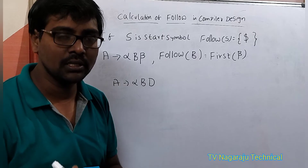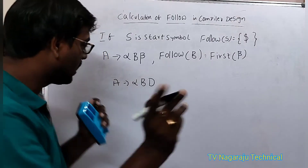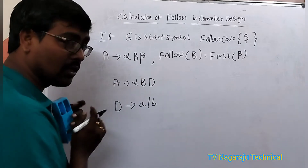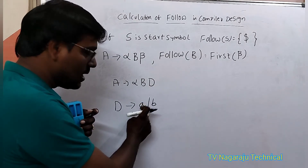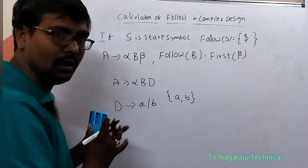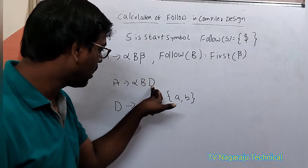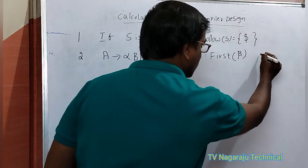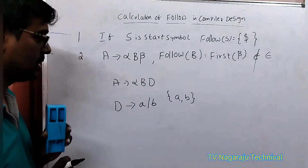The most important condition is: FOLLOW does not contain epsilon. Suppose the productions of D are {a, b}. Then the FOLLOW of B — since D is replaced with either a or b — is equal to {a, b}. If it is a terminal directly, we write the terminal; if it is a non-terminal, we replace it with its productions.